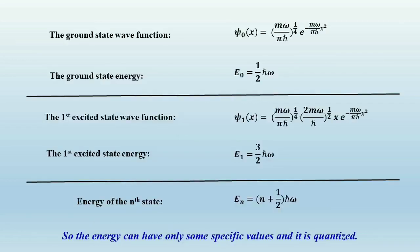Solving the Schrödinger equation, we obtain wave functions for several states along with their corresponding energy eigenvalues. The ground state wave function is ψ₀(x) equals (mω/πħ)^(1/4) · e^(−mω/2ħ · x²), and the ground state energy is E₀ equals ħω/2. The first excited state has energy 3/2 ħω and a more complex wave function. In general, the energy of the nth state is E_n equals (n plus ½)ħω, where n is an integer: n equals 0 for the ground state, n equals 1 for the first excited state, and so on.